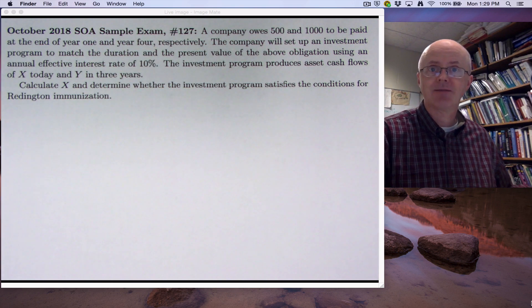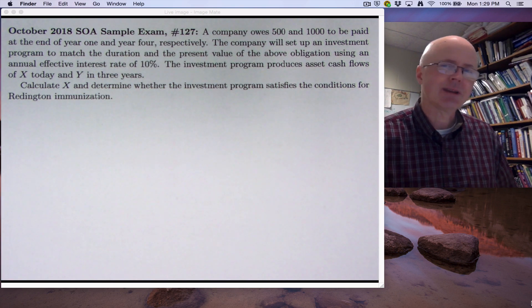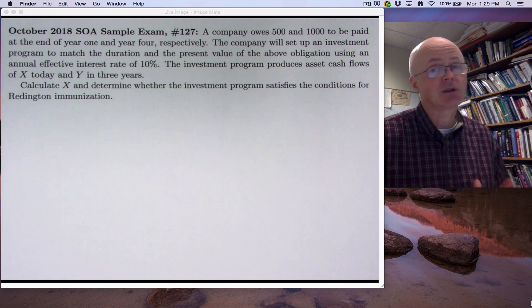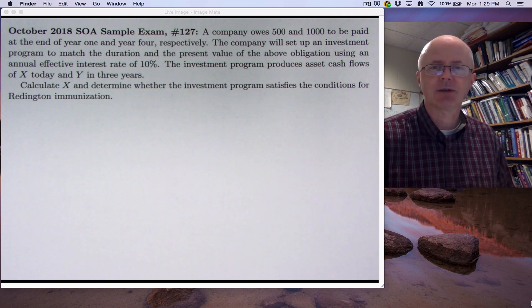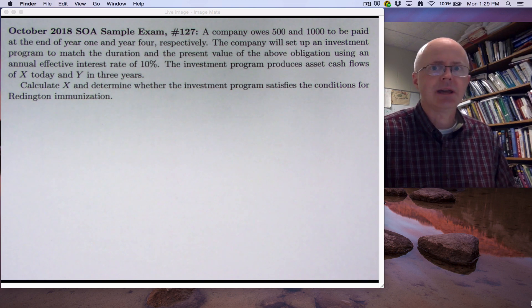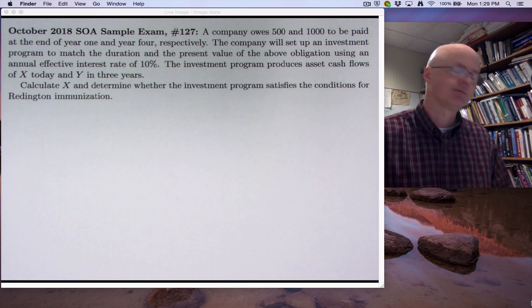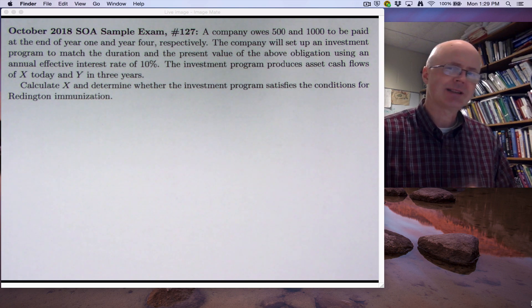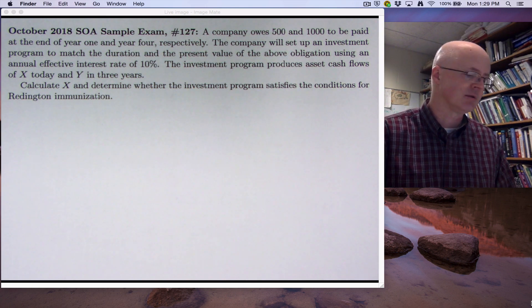And I'm actually going to tell you the answer to that ahead of time. Amazingly, Reddington immunization is not satisfied, which is going to seem strange because after all these first couple of videos we didn't have to think about whether Reddington immunization was satisfied or not. We just solved the problem and evidently it did work. But in this one, just doing those basic things that involve solving for the unknowns is not enough to achieve Reddington or full immunization.